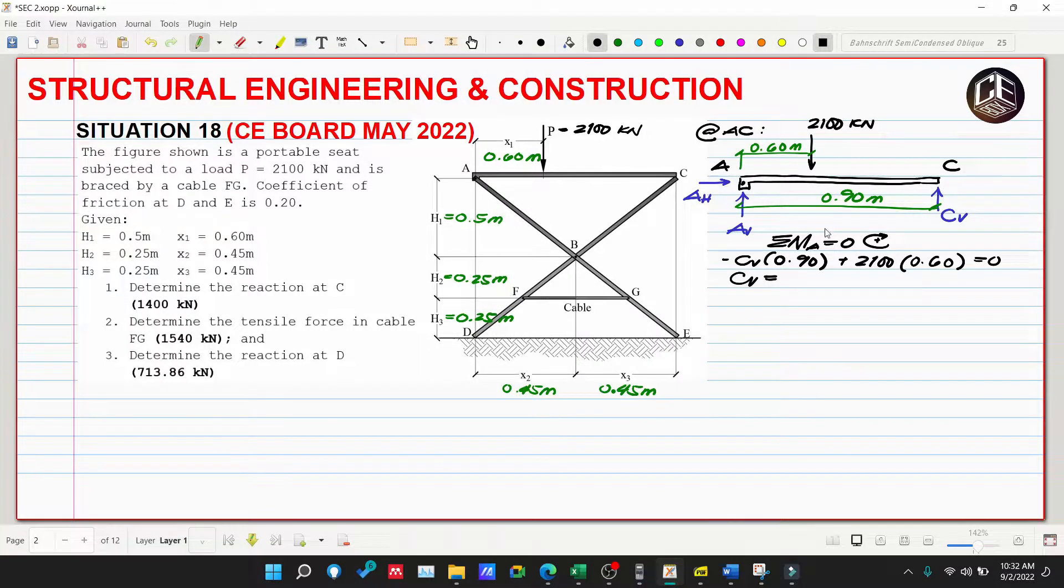So negative CV multiplied by 0.90 plus 21 multiplied by 0.60 equals zero. Therefore CV equals 14, so 14 is our CV. We don't need the direction for connection reactions because when we move to other members, they will be reciprocated. But of course, we need to know that at member AC, CV is upward.